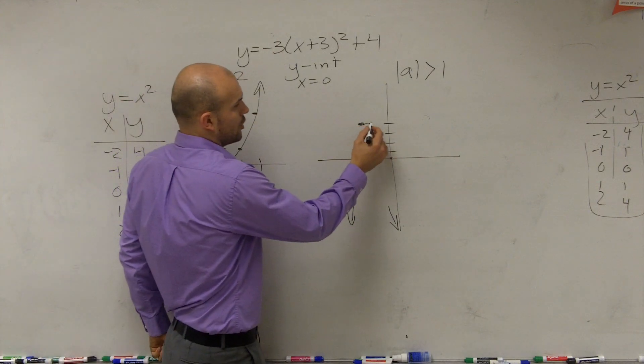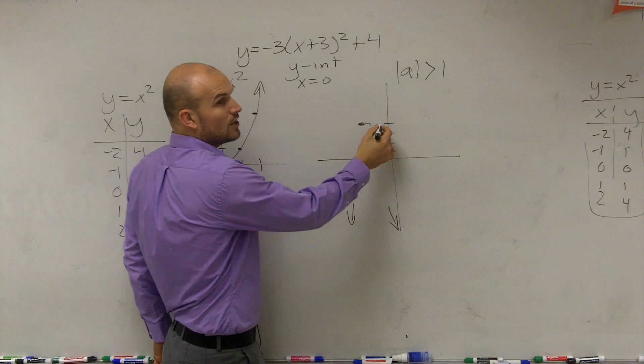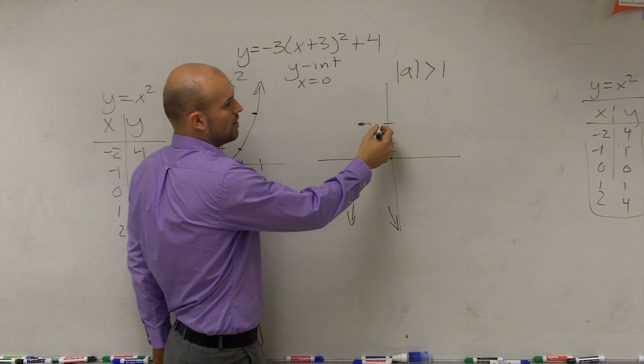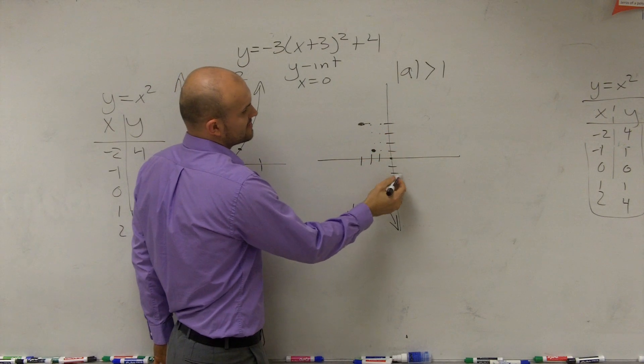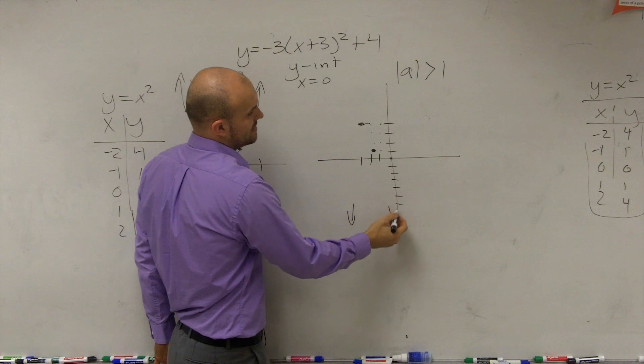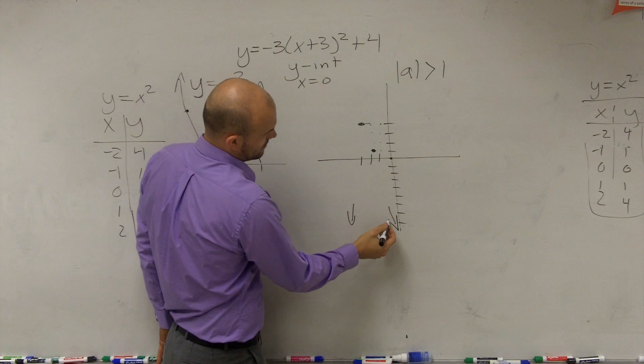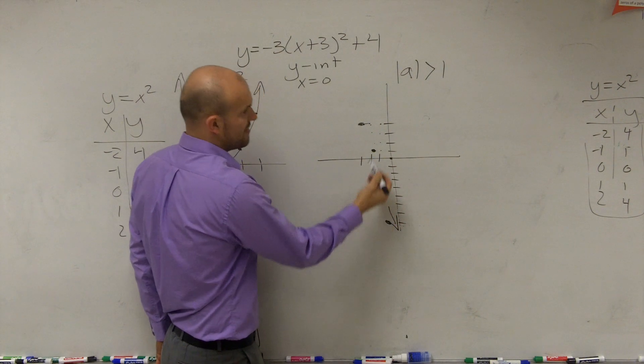And then usually what we did is we go over 2, up 4. Well, now since it's in a negative direction, I need to multiply that by 3. So I'm going to go over 2, down 3 times 4 is 12: 1, 2, 3, 4, 5, 6, 7, 8, 9, 10, 11, 12.